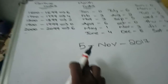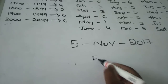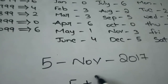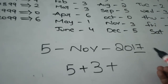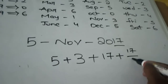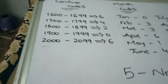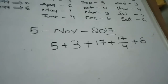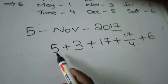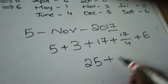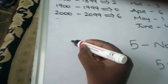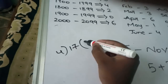Take the day number 5, then for November go to the month codes — November is 3. Take the last two digits of the year: 17, then 17 divided by 4. The century code is 6. So: 5 plus 3 is 8, plus 17 is 25.